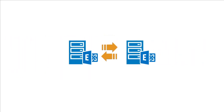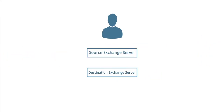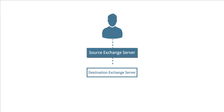Kernel for Exchange Server helps you migrate your mailboxes from one live Exchange to another. You can migrate mailboxes from a lower version of Exchange to a higher version, or vice versa. To use Kernel for Exchange Server for migrations, you have to connect first to the source Exchange server and then to the destination Exchange server.